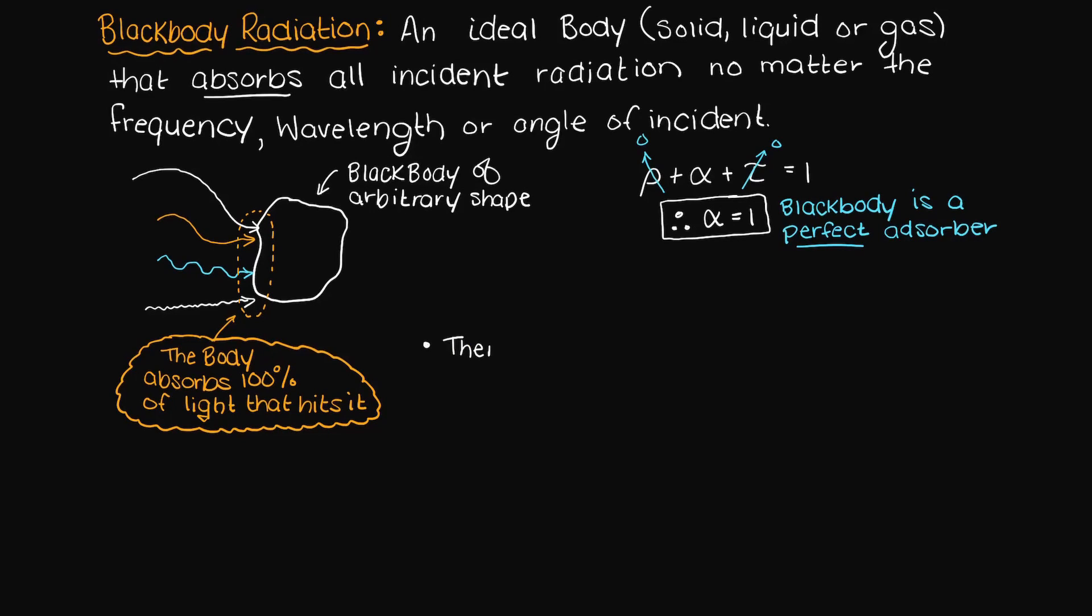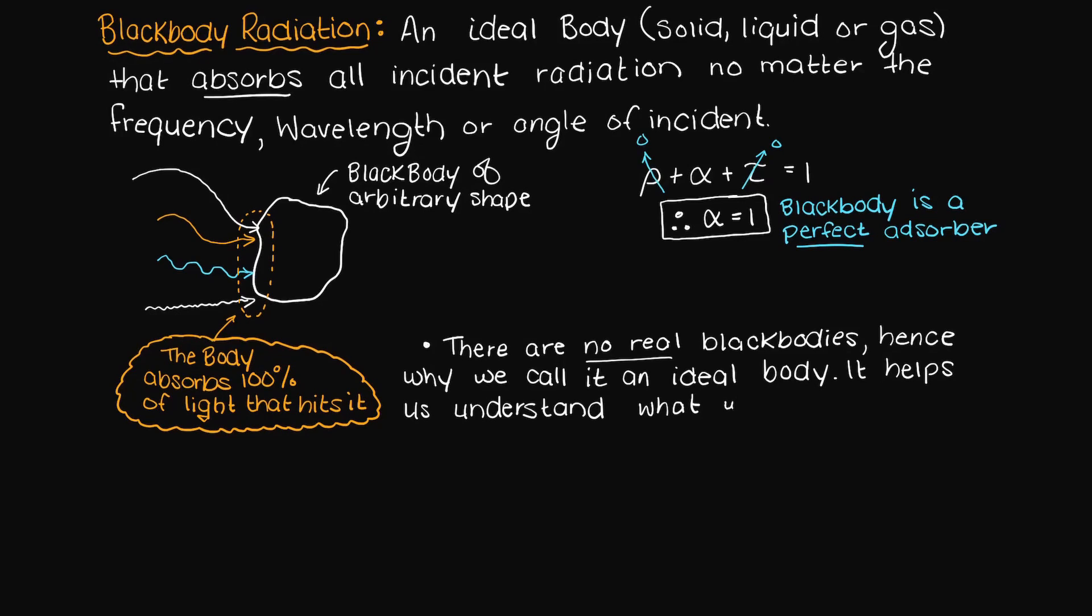Let's be clear, there are no perfect blackbodies, that is why we call it an ideal body. We can approach it using things like charcoal, or something else that makes the surface of a body as absorbent as possible to the incoming radiation. However, a perfect blackbody is impossible as there will always be some amount of reflection.